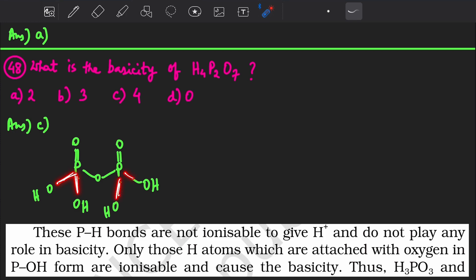So here you have four P-OH bonds: one, two, three, and four. Four P-OH bonds means the basicity is four. Got it? Basically this OH bond - this bond can easily break.